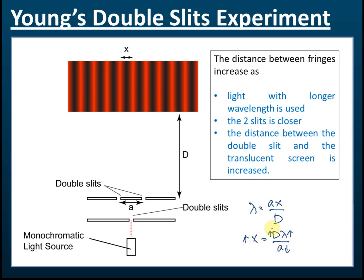So if we want to increase X, we must increase d, or increase lambda, or reduce a. The distance between the fringes will increase if light with a longer wavelength is used, or if the two slits are closer together — meaning a smaller a. A is the distance between the two slits. The last factor is that the distance between the double slit and the screen, d, is increased.